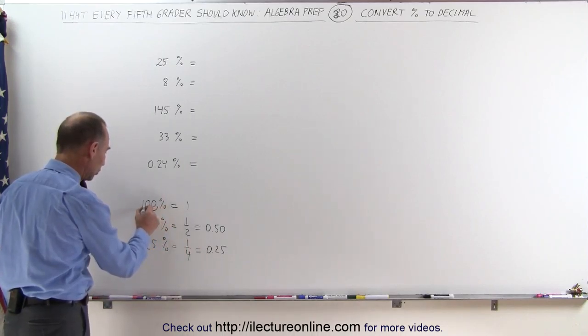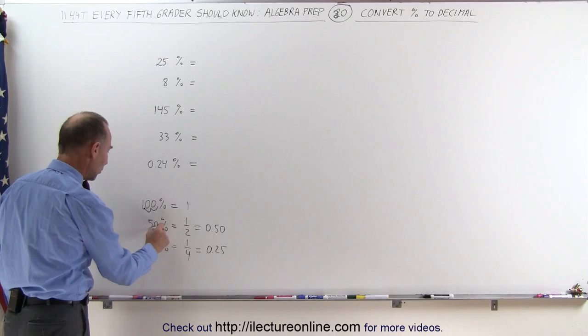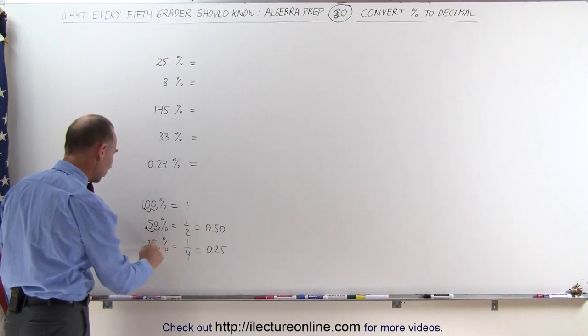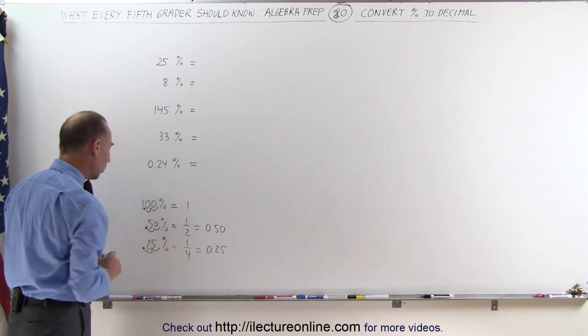So what I did here is one, two, I get the number one. I move the decimal place over two spots, I get the number 0.50. I move the decimal place over two spots, I get the number 0.25.